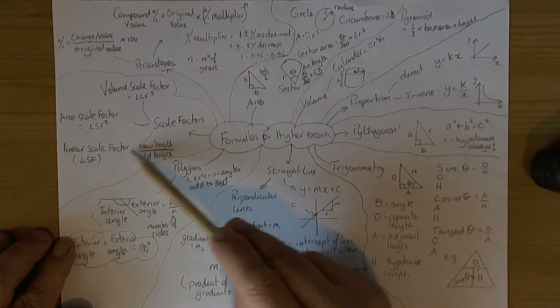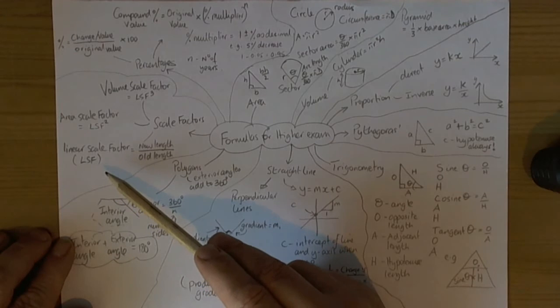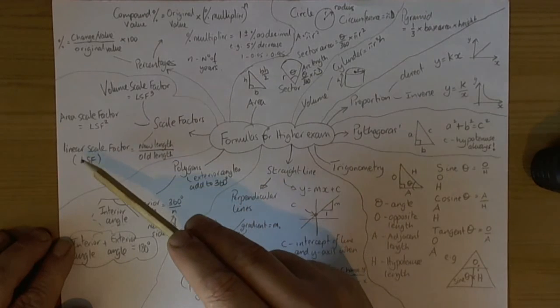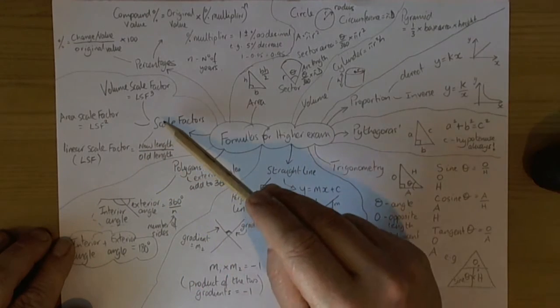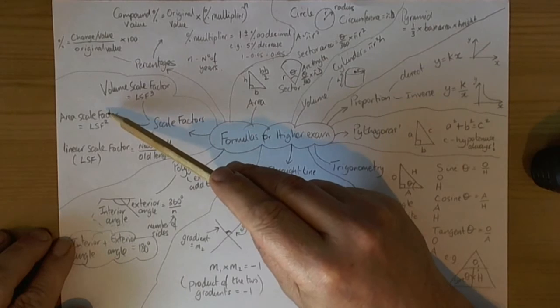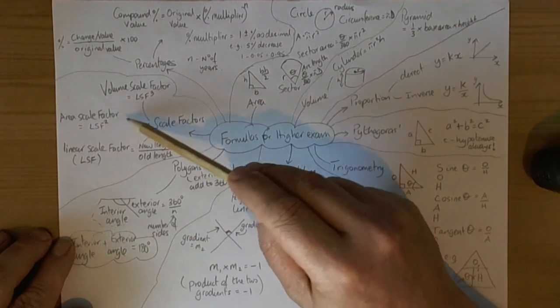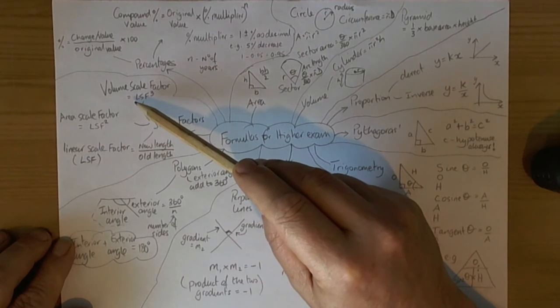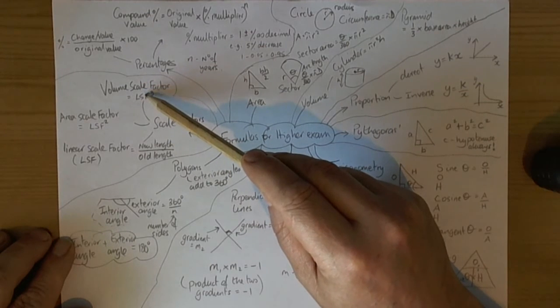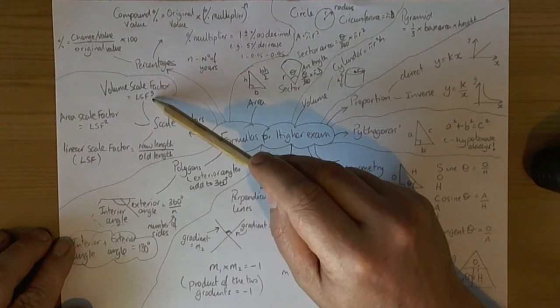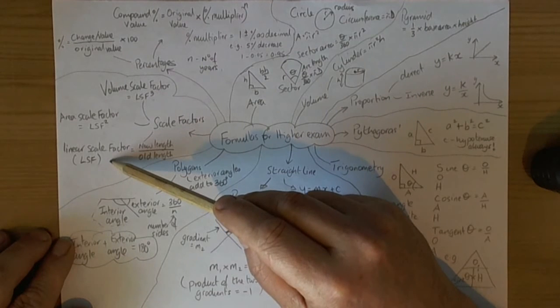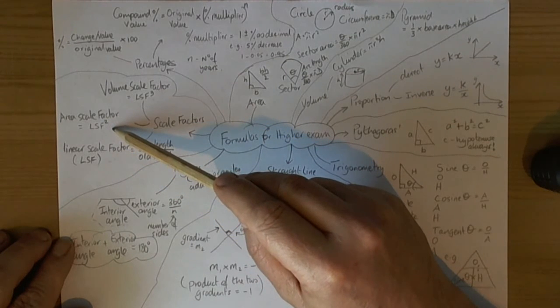Scale factors: we've got the standard 2D scale factor where we're going from say a rectangle to a larger rectangle, so we can take the lengths of corresponding sides. The new length divided by the old length gives us what we call the linear scale factor, how lengths have changed. But at A grades we've got to remember that there are two other types of scale factors. We've got the area scale factor which is related to the linear scale factor squared, and we've got the volume scale factor which is related to the linear scale factor cubed. Sometimes they give you information to calculate a volume scale factor and you need to find an area scale factor. So just remember that to get back to a linear scale factor, the opposite of cubing is cube rooting. And then once you've got the linear scale factor you can then square that answer to get the area scale factor.